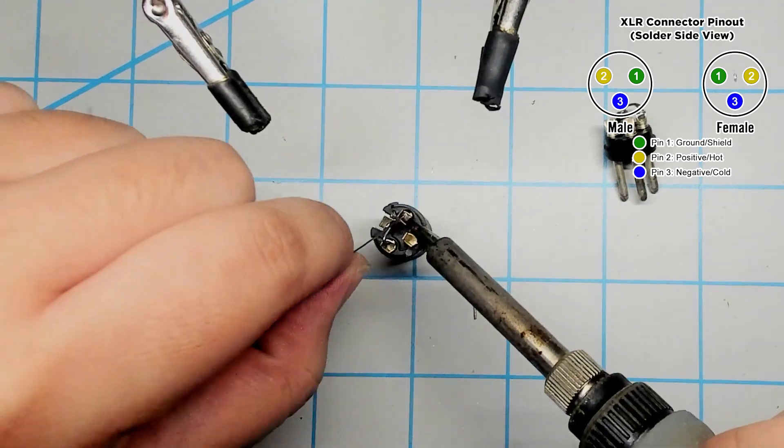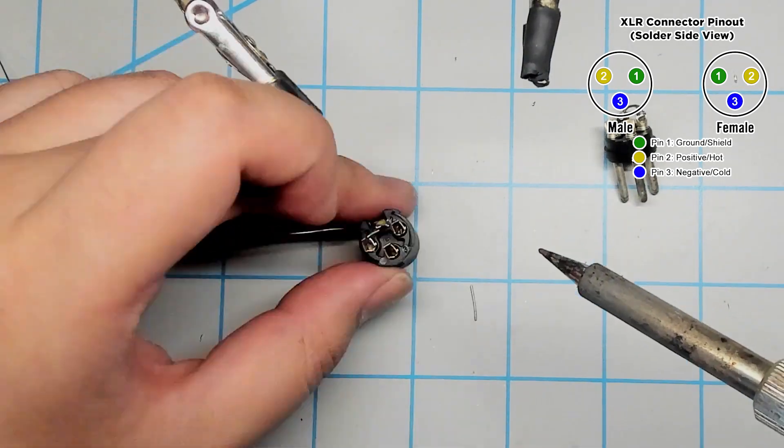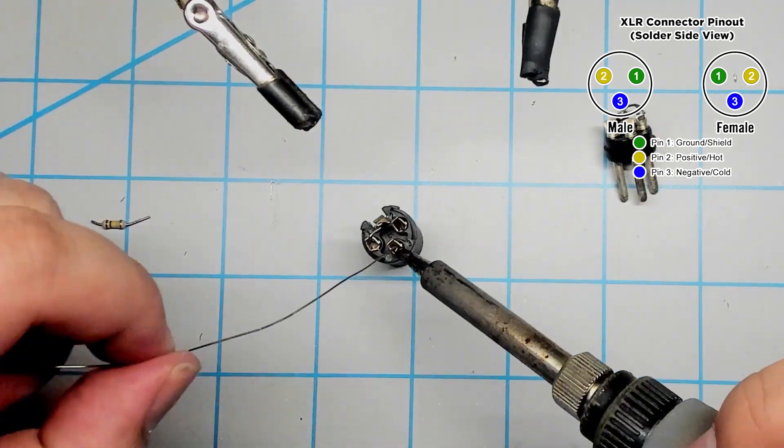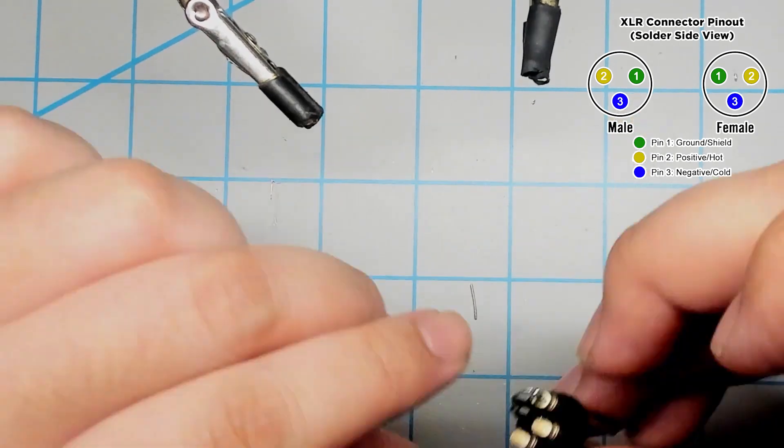At this point I'm going to add some solder to my XLR connectors to prepare them for making the final connections. Make sure to add a good amount of solder because we want these to be strong solder joints.